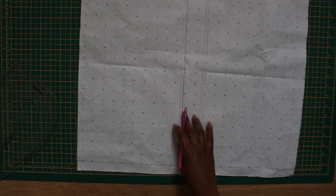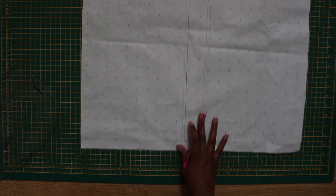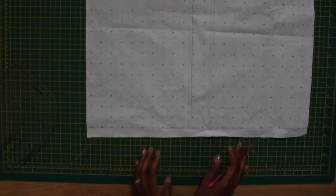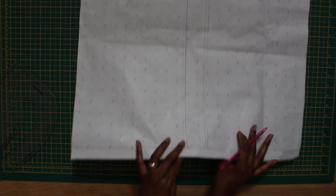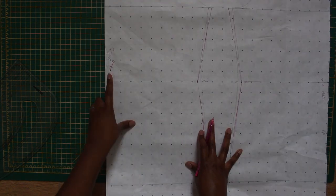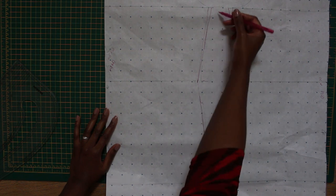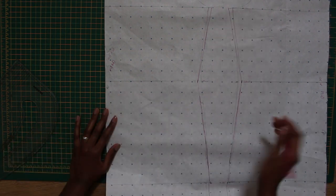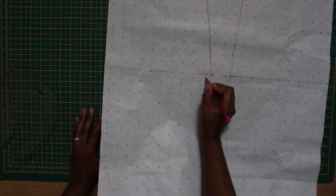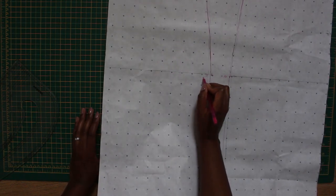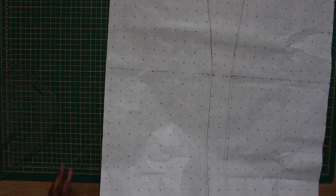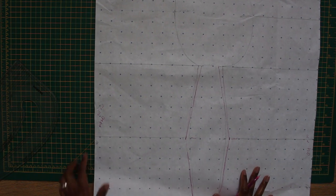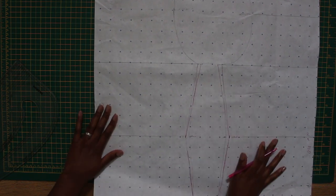I continued that until the hem of my dress. The back will be cut on fold and I'm gonna put my zip on the side at the hip area. I'm gonna have a long zip.